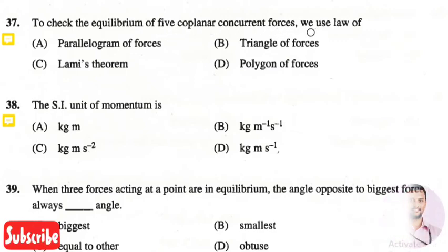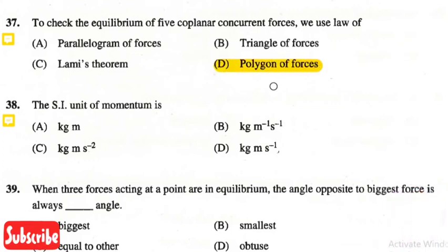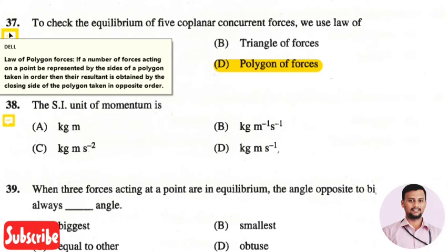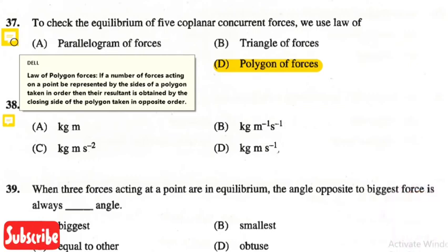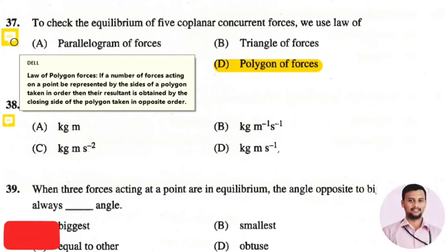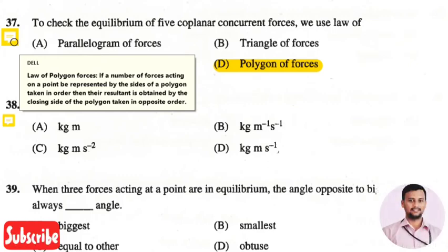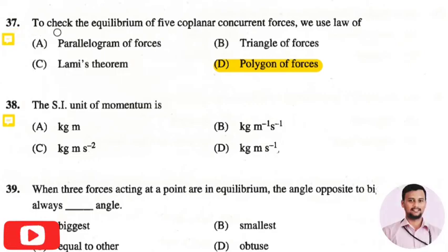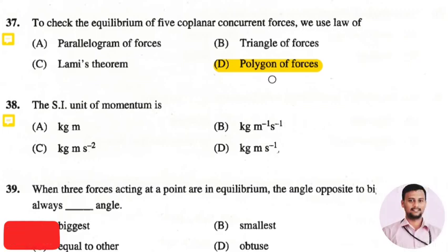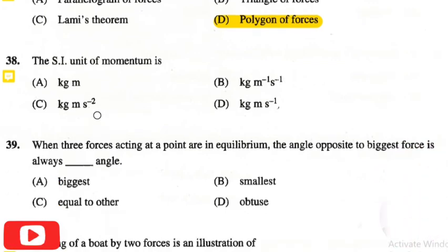The next question is: to check the equilibrium of five coplanar concurrent forces, we use — the right answer is option four: polygon of forces. The law of polygon of forces states that if a number of forces acting on a point are represented by the sides of a polygon taken in order, their resultant is obtained by the closing side of the polygon taken in the opposite direction.